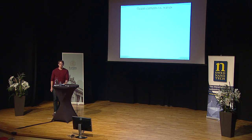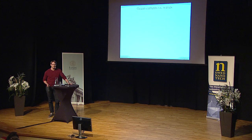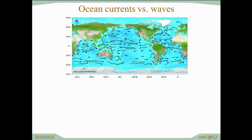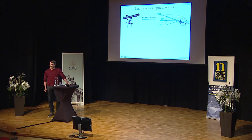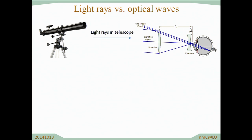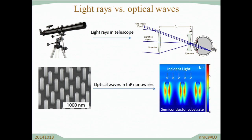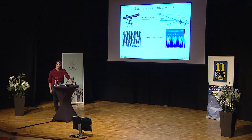Before going into optical waves, I want to show an example of more common waves that we see. On the large scale we have ocean currents that describe the motion of water on the global scale, whereas on the smaller scale we have water waves that can show completely different behavior than what we would expect from the global behavior. In a very similar way, we have light rays that can explain how a telescope works — by looking at how light rays from an object go through the lens system and reach our eye. And in the same way as water waves, when we look at the small scale, the light behaves completely differently. Here we see a light wave hitting a nanowire array, where we see a completely different kind of antenna behavior that cannot be explained with light rays.